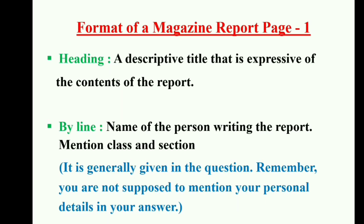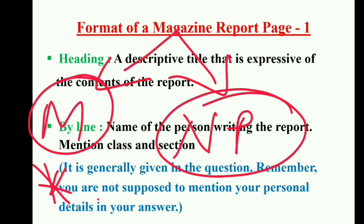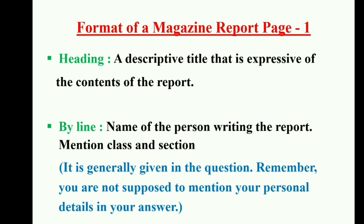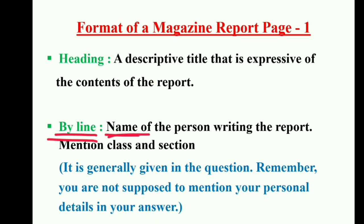We write reports for magazines and for newspapers, and both have different ways of writing. There are different formats for magazine report writing and newspaper report writing. In magazine report writing, you have to write a heading first. In the heading you have to write a title that is expressive of the content of the report — the title should make the content clear. Then comes the byline, which is the name of the person who is writing the report. Since it is for a school magazine, the student should write their class and section.